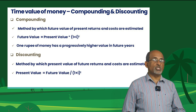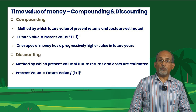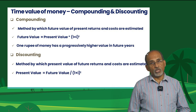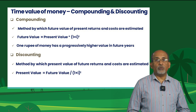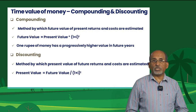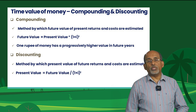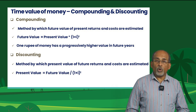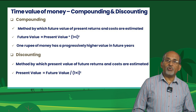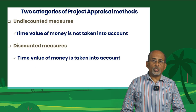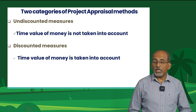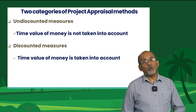The important variables determining the present and future values of a single payment or a series of payments are the number of conversion periods or years, that is the project period, and the magnitude of the interest rate per year. Both factors interact to determine the total effects of discounting or compounding on the present or future values. At lower interest rates, the number of years has only a little effect on both present and future values. There are two categories of measures to assess the worthiness of an investment: the undiscounted and the discounted measures.